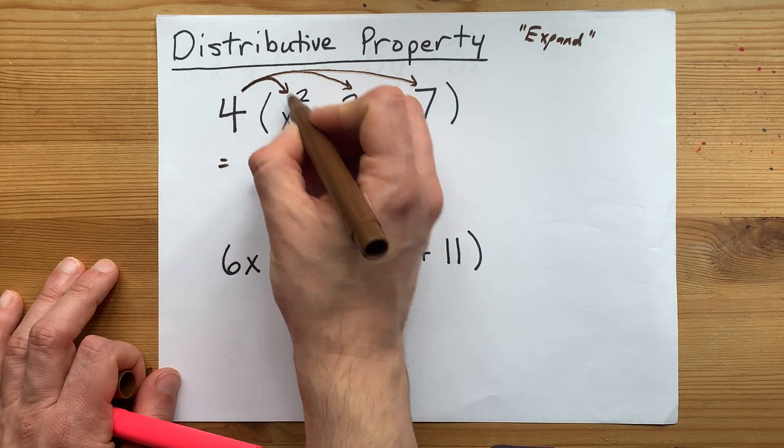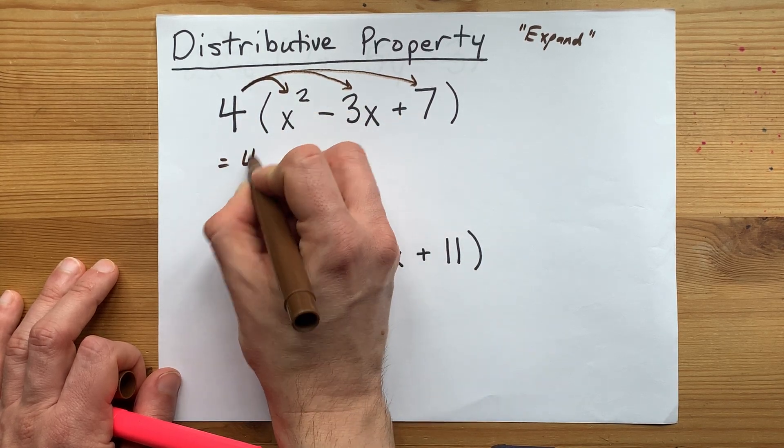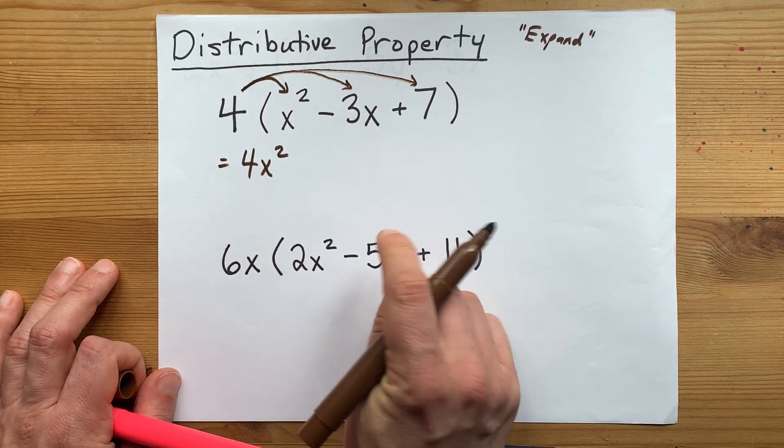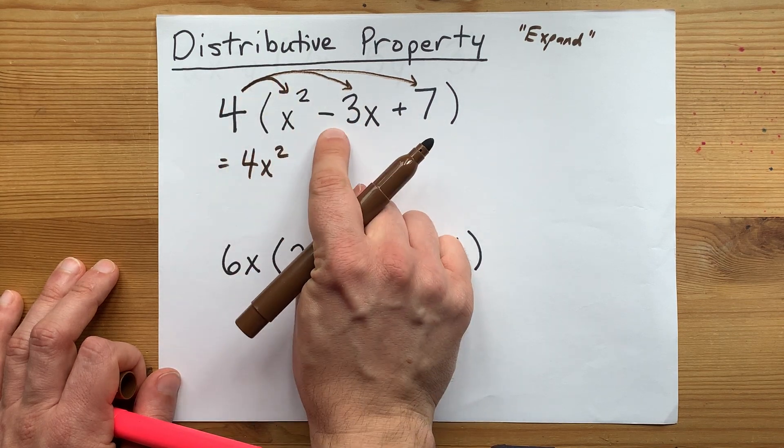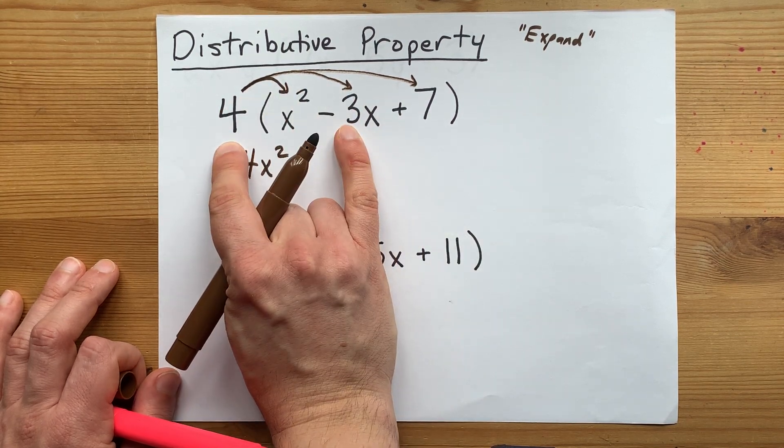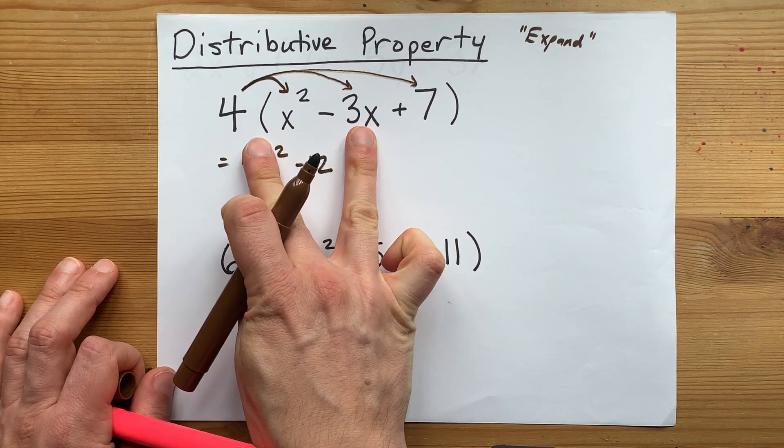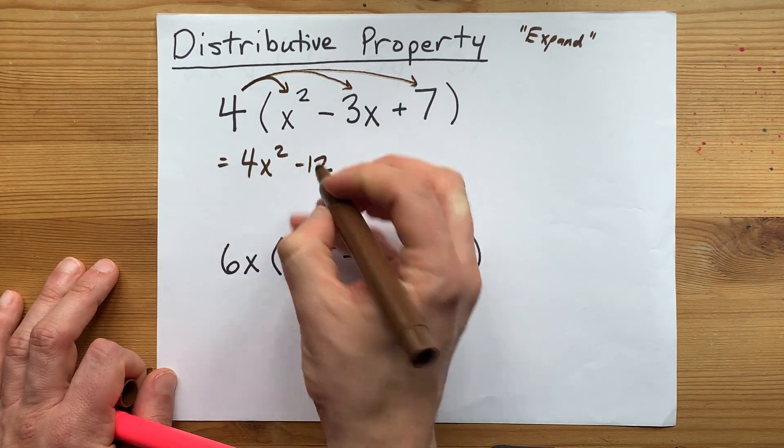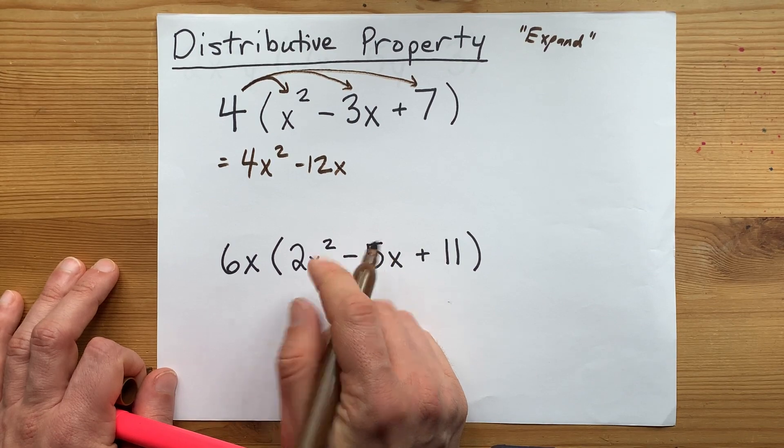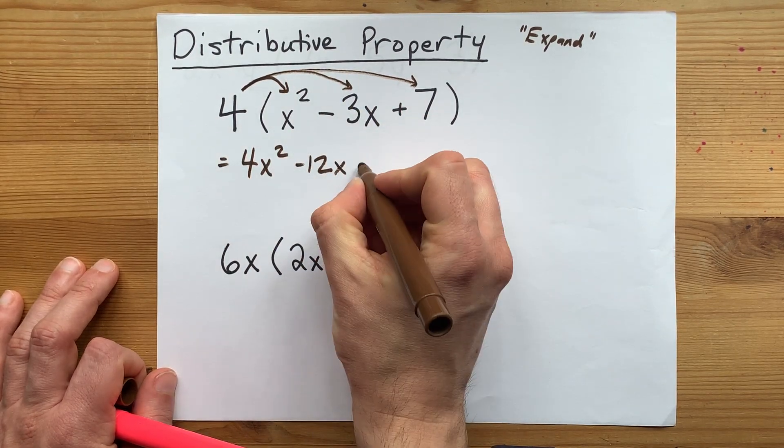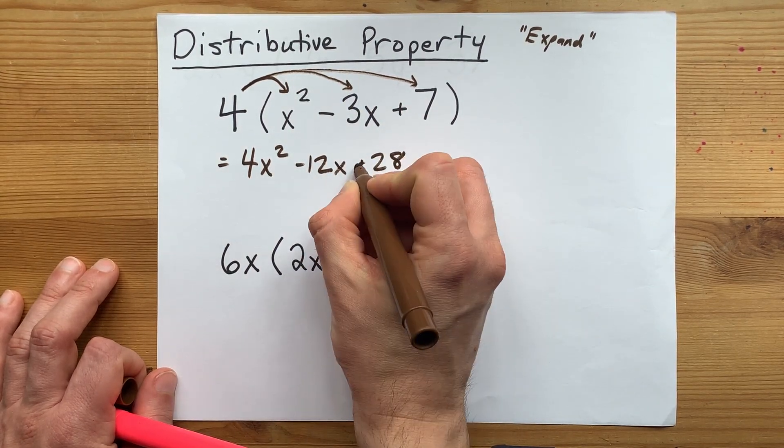So what I end up with is 4 times x squared, which actually is just 4x squared. 4 times negative 3x, the numbers will multiply together. That's minus 12, and the letters combine as well, but there are no letters here, so I just write x. And 4 times positive 7 is positive 28. Nice.